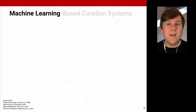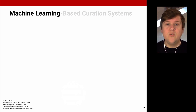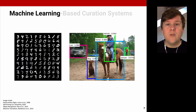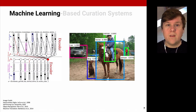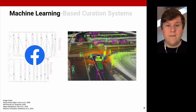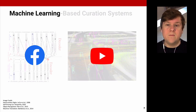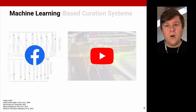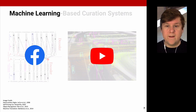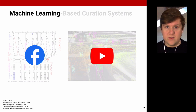Machine learning enabled many recent advances in AI. It is used to recognize handwritten digits, to recognize people and objects in images, to translate between languages, to drive cars, and — the focus here — to recommend posts, photos, and videos on platforms like Facebook and YouTube. In my research, I focus on Facebook and YouTube because they are two of the most visited websites worldwide and they use ML-based systems to curate content for billions of users.